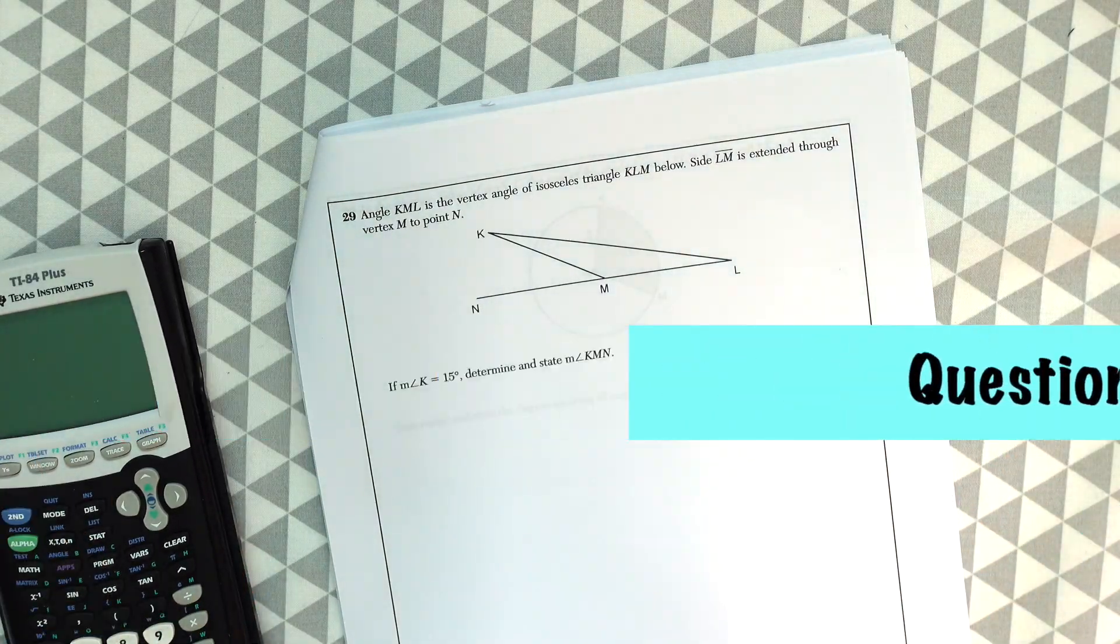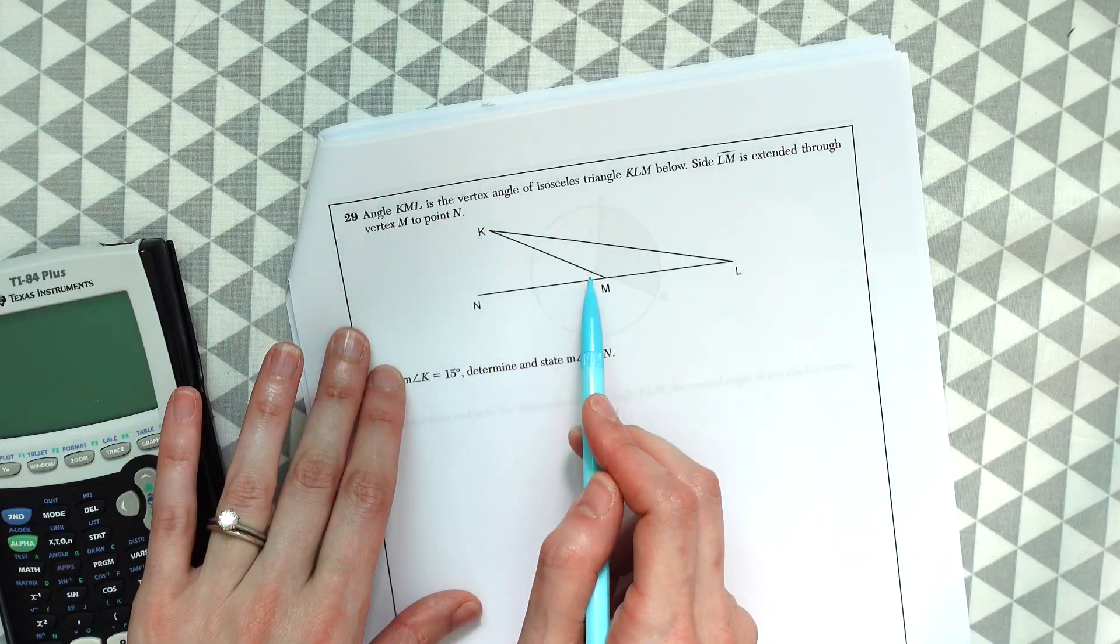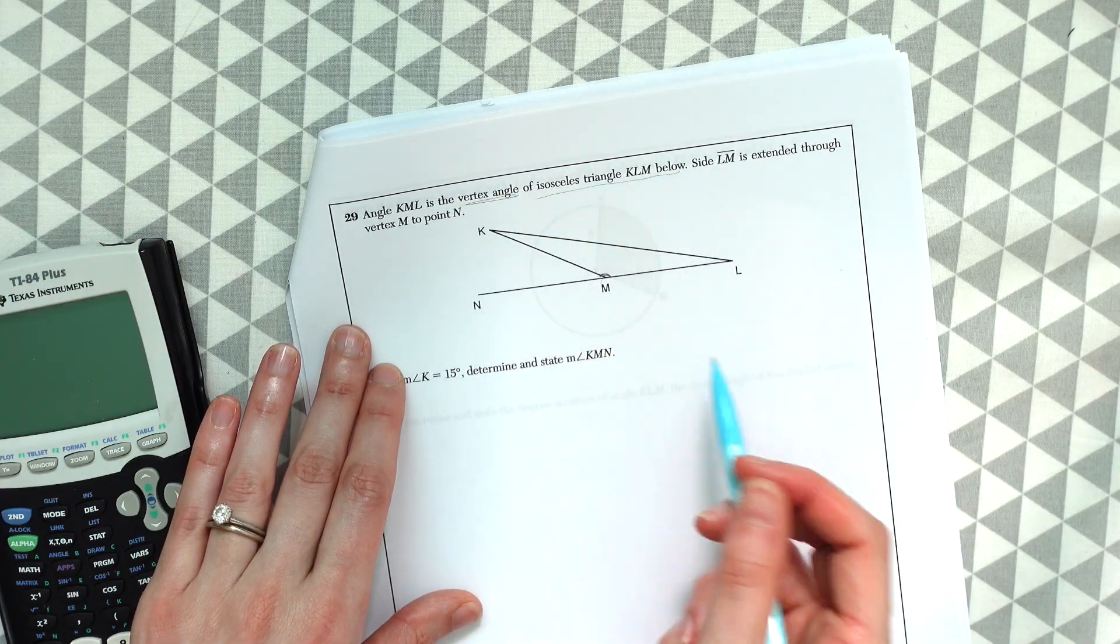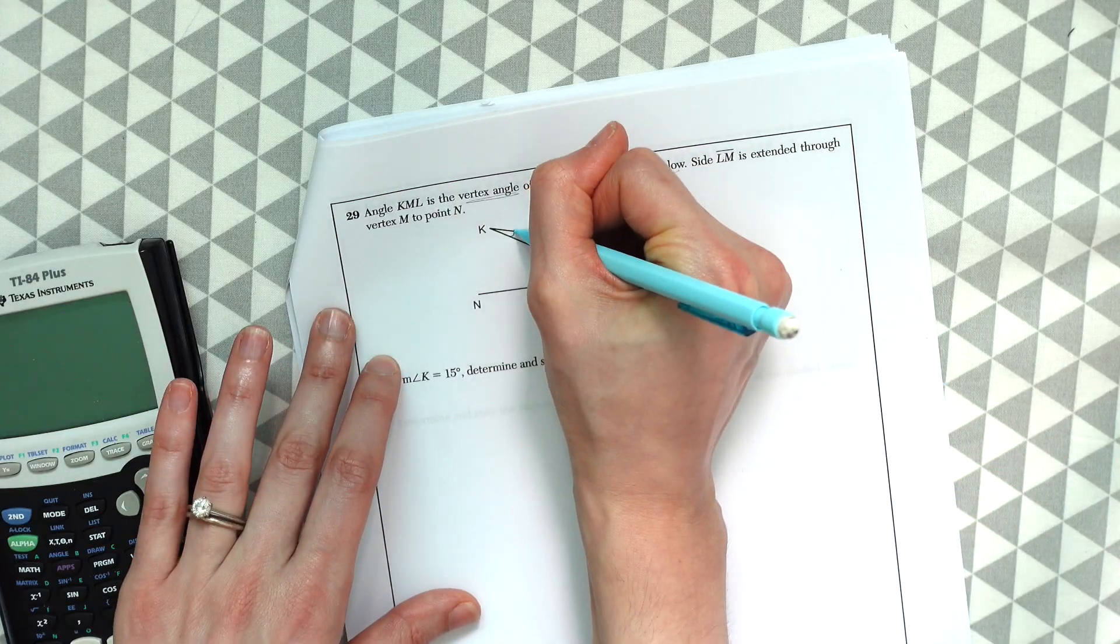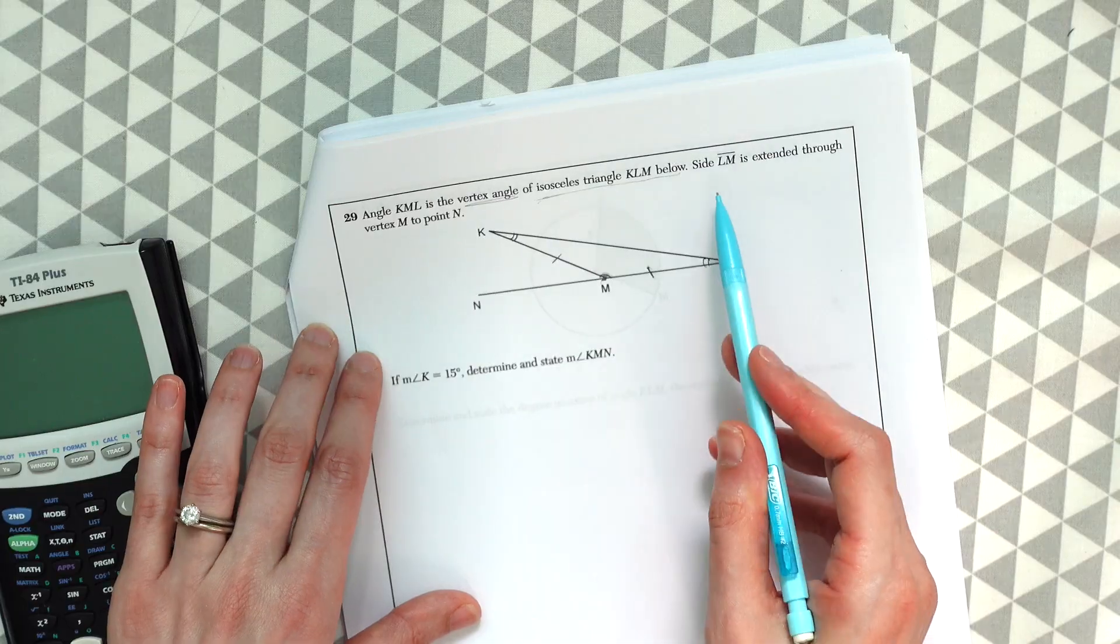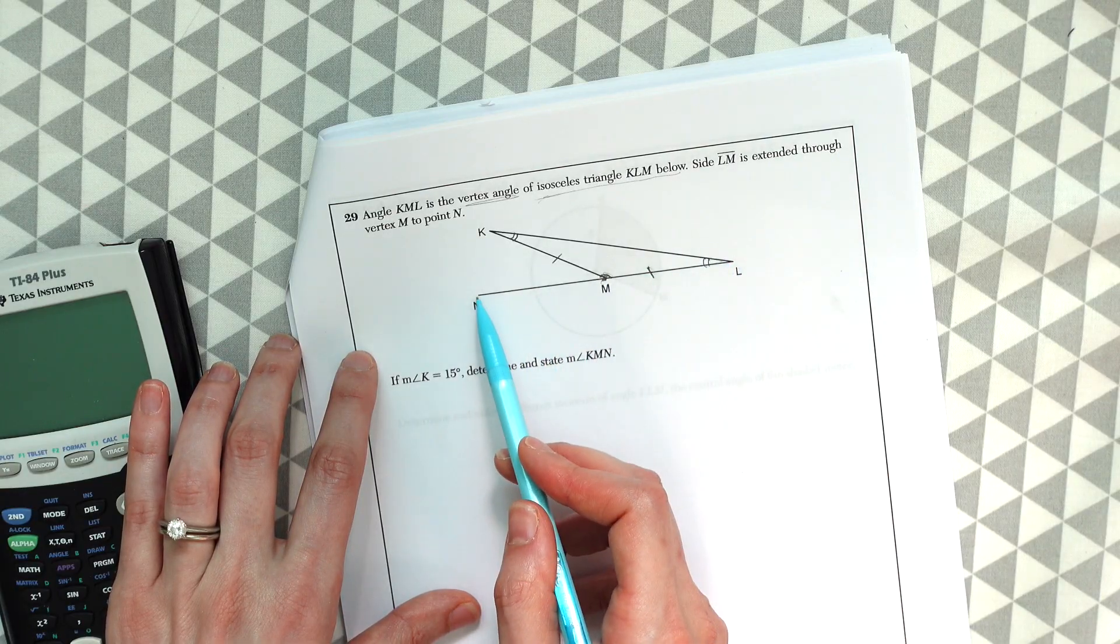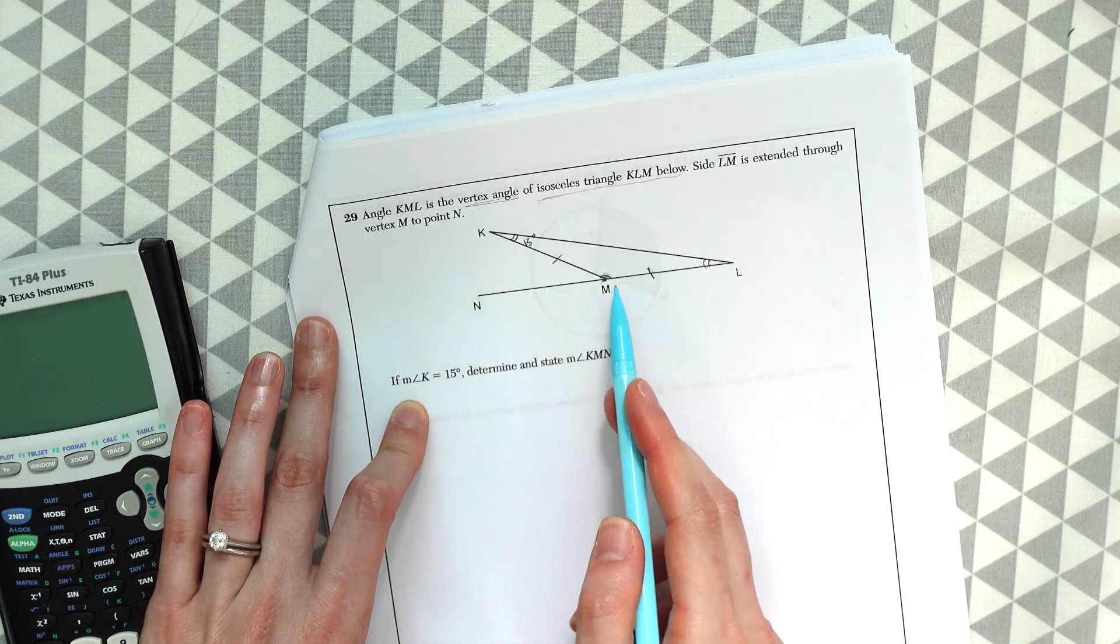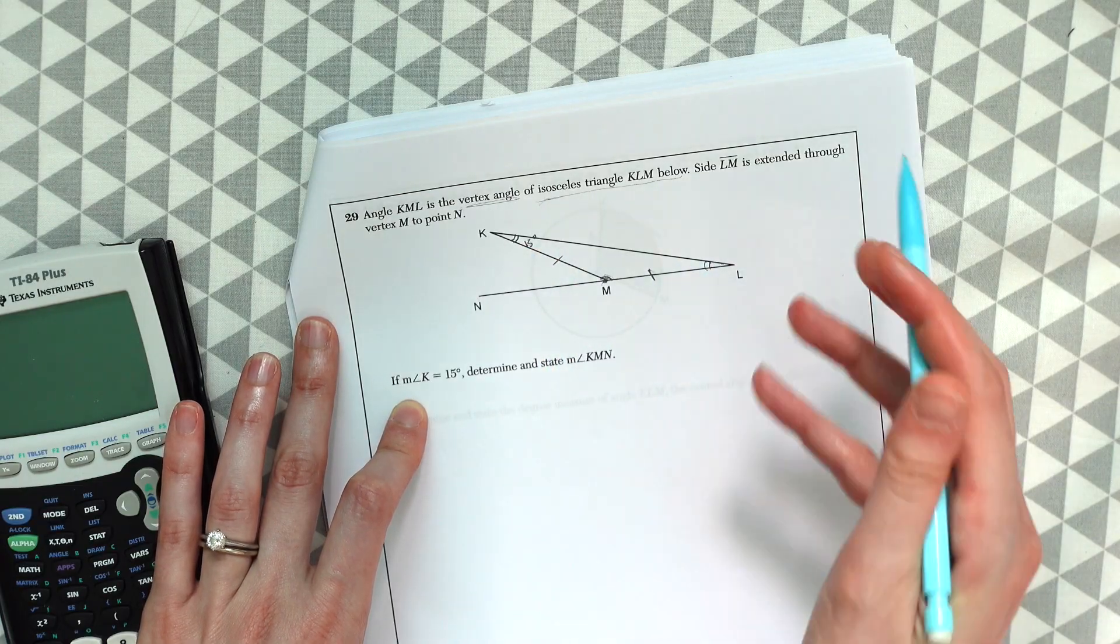Question 29. Angle KML is the vertex angle of isosceles triangle, so they're already giving us a clue here. Angle KML is the vertex angle, so that means like the top angle of an isosceles triangle below. So that means that this is the vertex and then that these sides are congruent to each other because this is an isosceles triangle. And that's also going to mean that this angle K will be congruent to this angle L. Let's see what else they give us. Side LM over here is extended through vertex to point M. So we see that this L goes all the way out extended to N. If angle K is 15 degrees, determine and state angle KMN. So if we know that this is 15 degrees, since this is an isosceles triangle, we know that this angle L is also going to be 15 degrees.